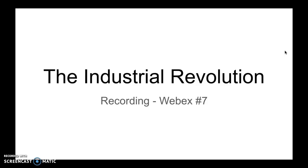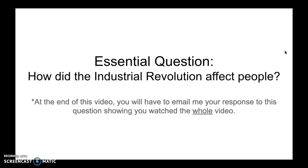Hi and welcome back to our discussion about the industrial revolution. Earlier this week you should have learned what the industrial revolution was, as well as starting to understand the impact it is going to have on cities. As we continue that discussion this week, we are going to focus on how did the industrial revolution affect people. Your job is to watch this entire video and then email me a response showing that you've watched it, covering the several examples I'm going to give you about how this affected different groups of people.